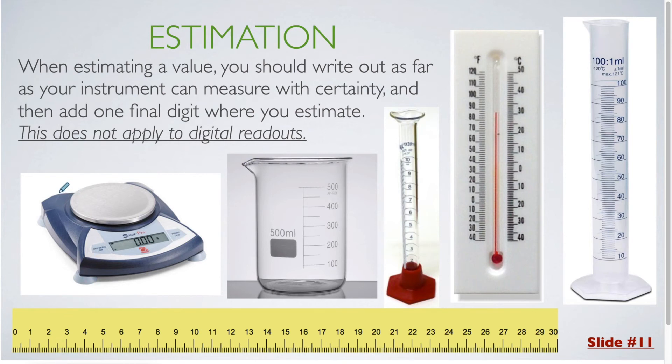So for example, here we have an electronic balance. This is an instrument that we're going to be using a lot in this course. The electronic balance measures to two places after the decimal. So you are always going to record your measurement to two places after the decimal. This one you do not have to add any kind of extra digit after. It's doing the estimation for you. But for any other objects, such as a beaker, or a graduated cylinder, a thermometer, or a ruler, you need to estimate based on what you can actually see.